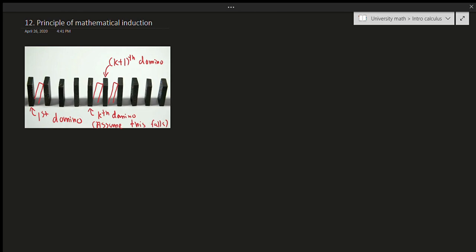And why is that? Well, suppose k equals 1. That means k equals 2, so the second domino must fall. Then k plus one, k equals 3, so the third domino must fall. Add one, the fourth domino must fall. Add one to that, the fifth domino must fall — sixth one, seventh one, and so on. So we can now conclude that all the dominoes fall. This is essentially how induction works.